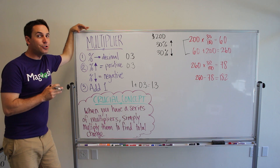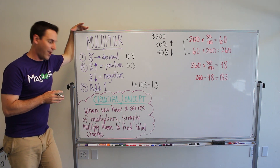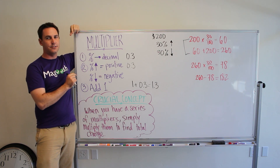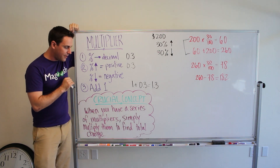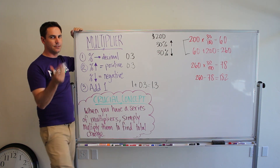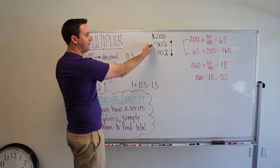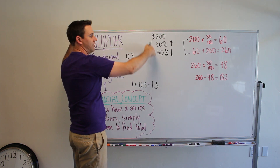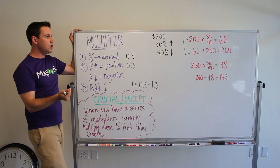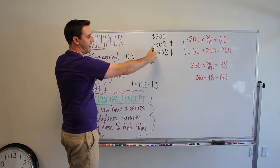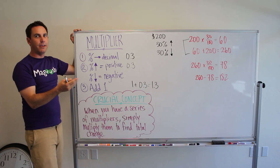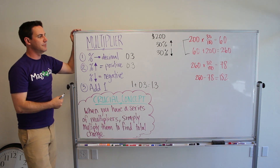The crucial concept I want you to walk away with is that when you have a series of multipliers, simply multiply them together to find the total change. That's what we have here — a 30% increase followed by a 30% decrease, so we have a series of changes. We can find each multiplier, multiply them together, and it becomes a two-step problem.